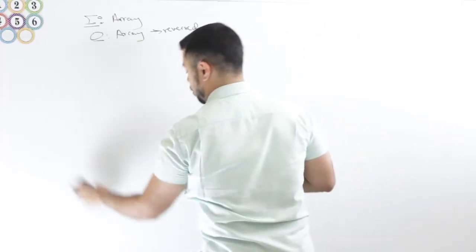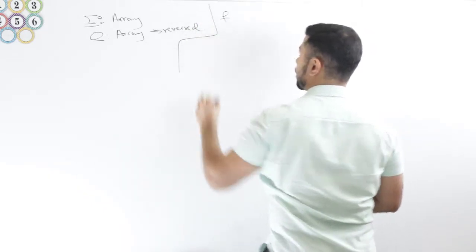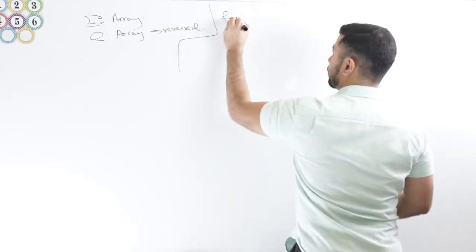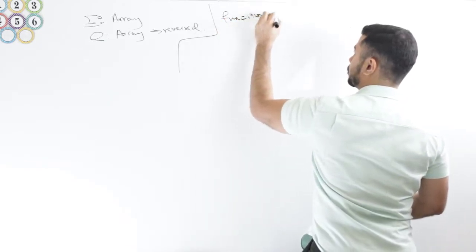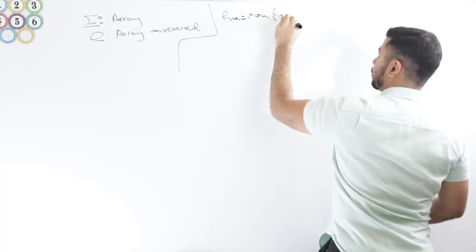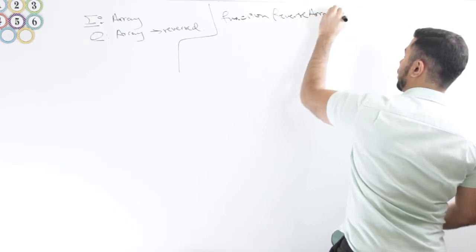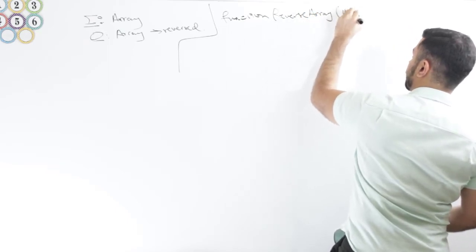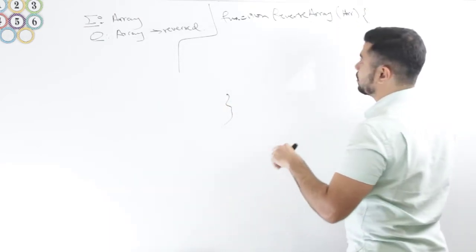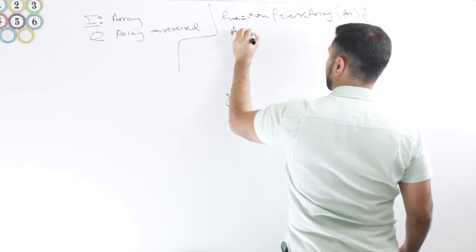So let me erase this. And all we're doing is we are iterating on the array and we're swapping. So let's say I have function, let me call it reverse array. It takes in an array.